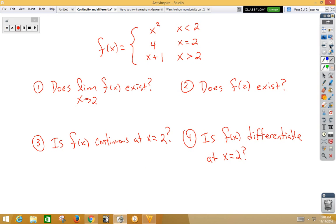First of all, does the limit exist? Notice again, it's a two-sided limit. So, we'll start with the limit as x approaches 2 from the right side of f of x. From the right side, that would be using x plus 1. And when we plug in a 2 for x plus 1, we would get 3.